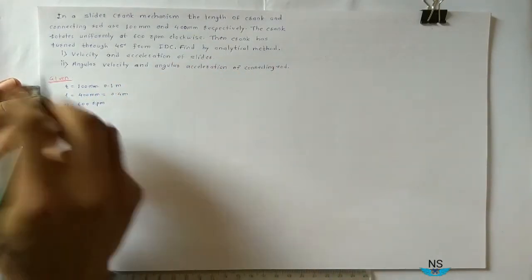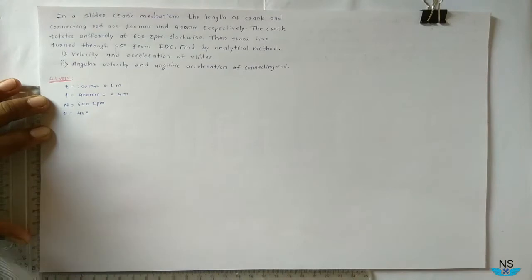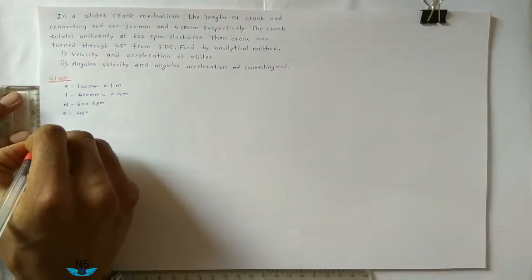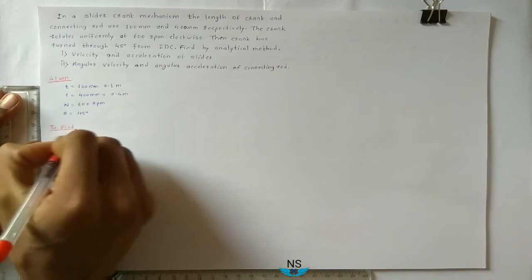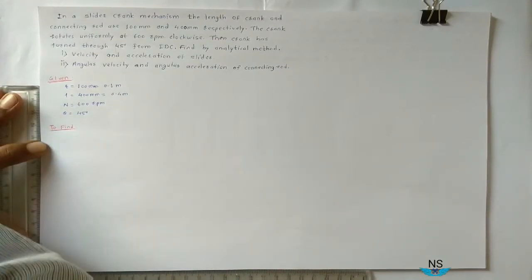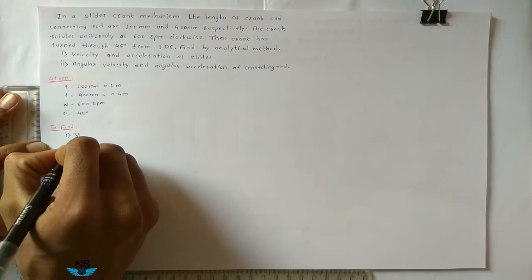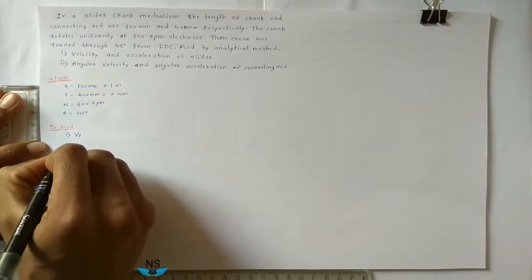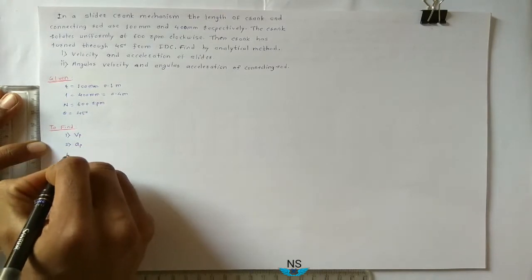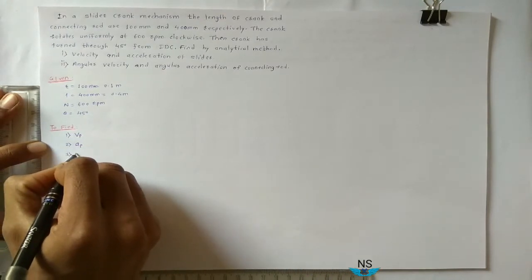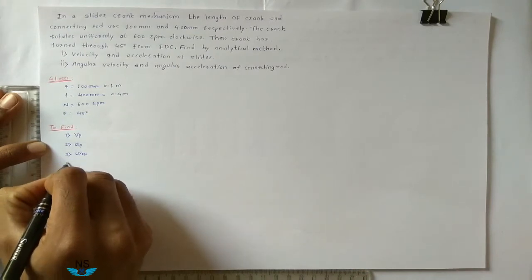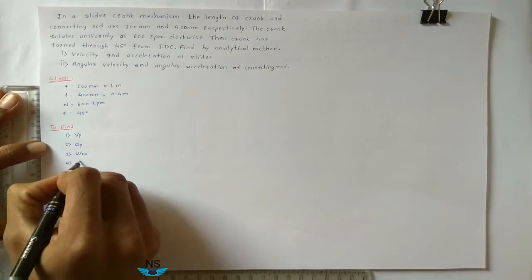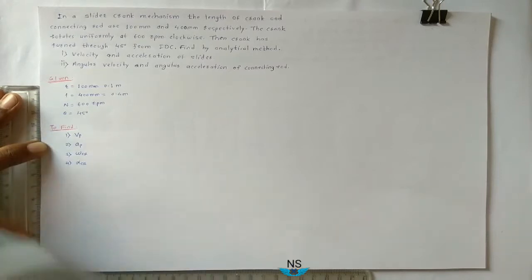Find by analytical method. To find: one, velocity of piston; second, acceleration of piston; third, angular velocity of connecting rod; and fourth, angular acceleration of connecting rod.